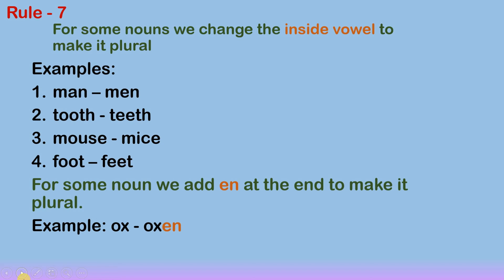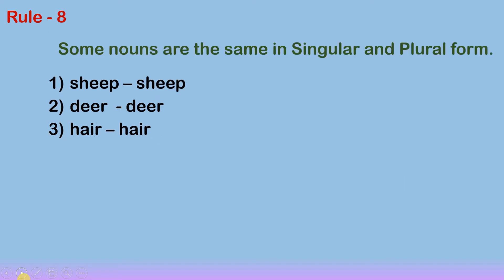Rule number eight: some nouns are the same in singular and plural form. For example, one sheep — many sheep; one deer — many deer. We do not change the spelling when changing from singular to plural. Nouns that do not form plurals in the usual way are called irregular nouns.